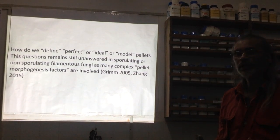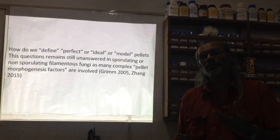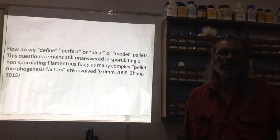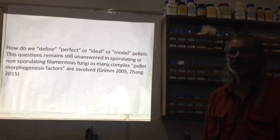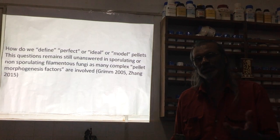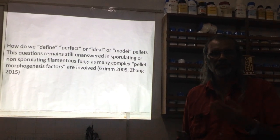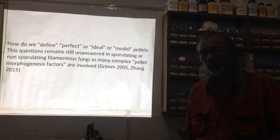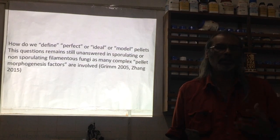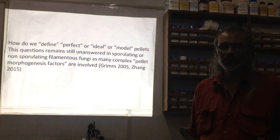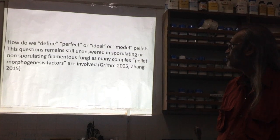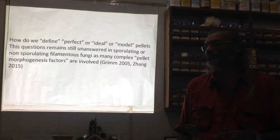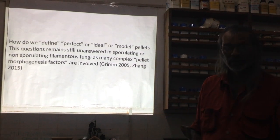In sporulating fungi, pelletization takes place from a mass of spores, so those colonies are totally different from non-sporulating forms. If culture is started from plate-grown solid media and used as inoculum, its behavior will be totally different from what you see when spores are used to start a pelletization process. There are complex pellet morphogenesis factors which are yet to be fully understood.